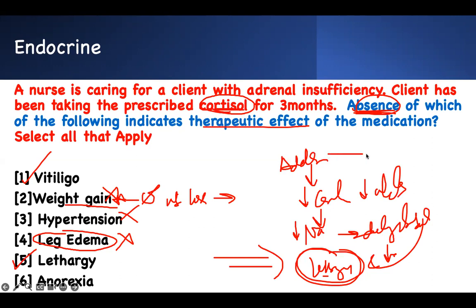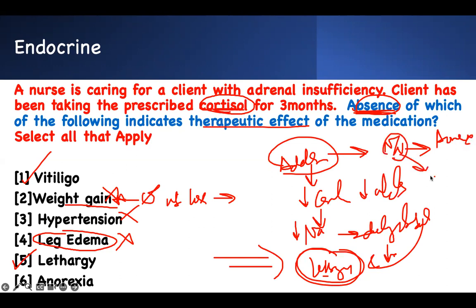One of the classic symptoms of Addison's is nausea and vomiting, which triggers anorexia — they don't want to eat, and if they eat they become nauseated because they are dehydrated. So if you give them cortisol, the anorexia resolves. Absence of anorexia indicates therapeutic effect of the medication.